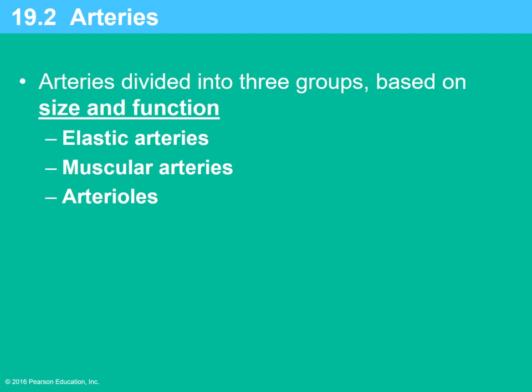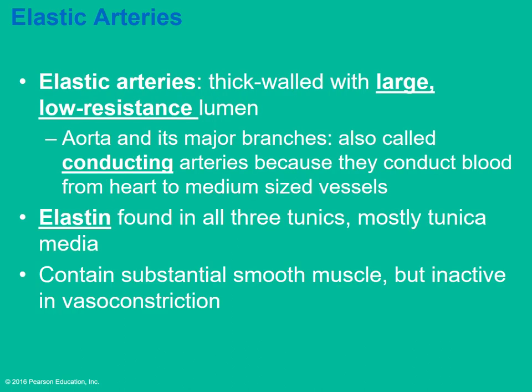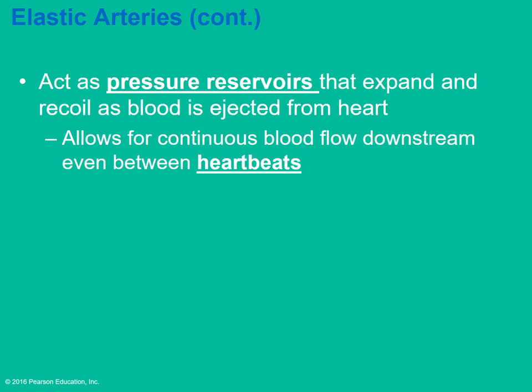Arteries are divided into three groups based on size and function. Elastic arteries are very thick-walled with low resistance in the lumen. These include the aorta, the largest blood vessel in the body, and its major branches. The elastin is mostly in the tunica media and they have smooth muscle that allows them to expand and recoil as blood is pumped from the heart. They must withstand a lot of pressure and maintain continuous blood flow even between contractions.